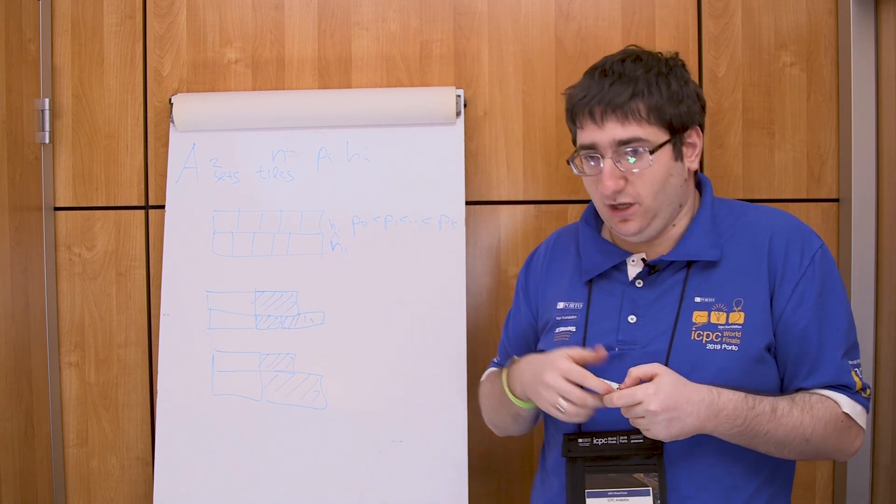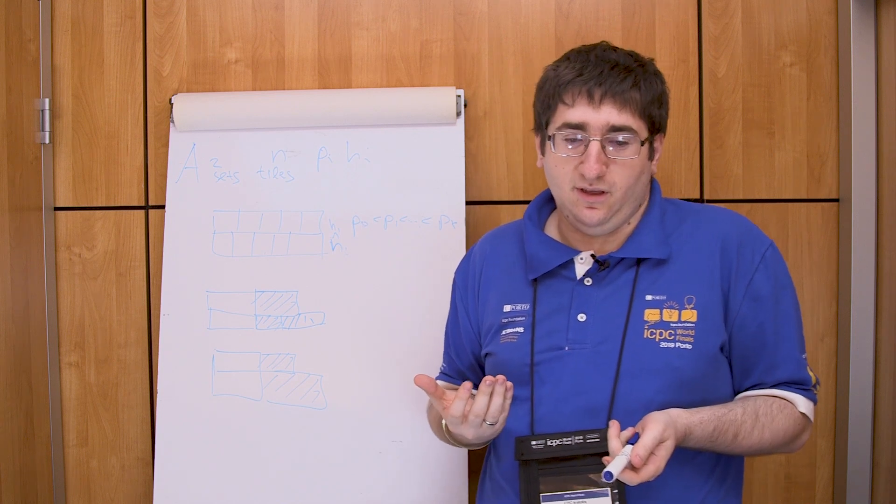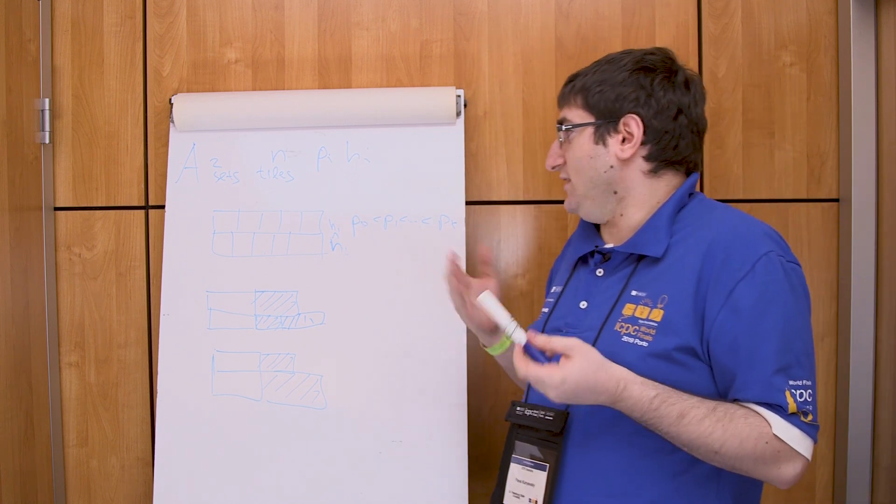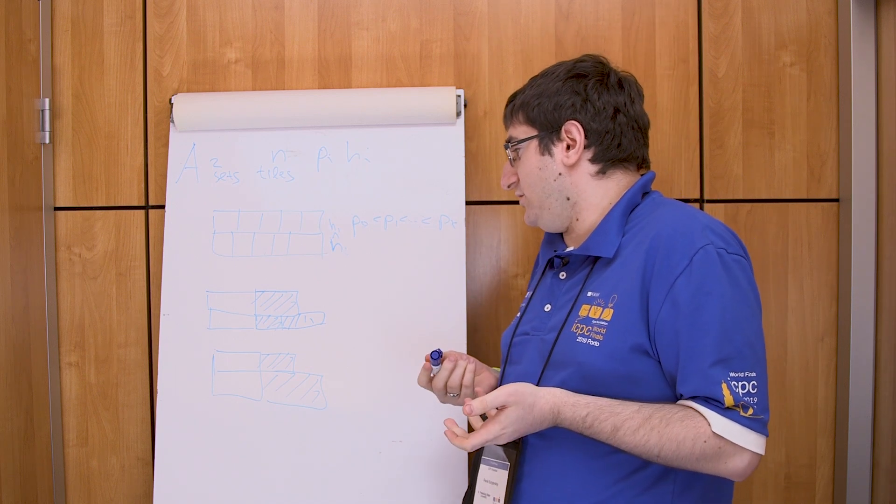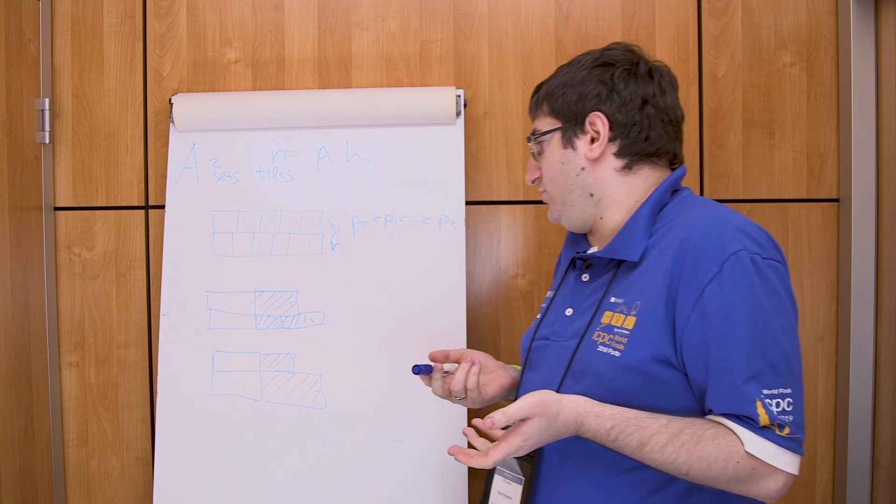Doing this one by one will solve the problem in quadratic time. So this is not enough to get accepted because there are big constraints, so we need some data structure to make this faster.